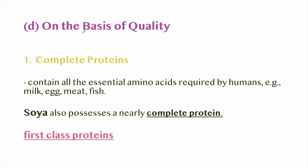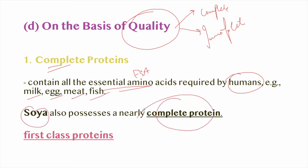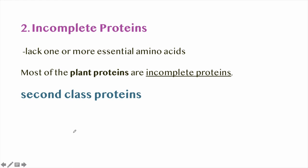On the basis of quality, proteins are of two types: complete proteins and incomplete proteins. Complete proteins contain all the essential amino acids required by humans. Examples are milk, egg, meat, and fish. Soya also possesses nearly complete protein. They are also known as first-class proteins. Incomplete proteins lack one or more essential amino acids. They are also known as second-class proteins. Most plant proteins are incomplete proteins.